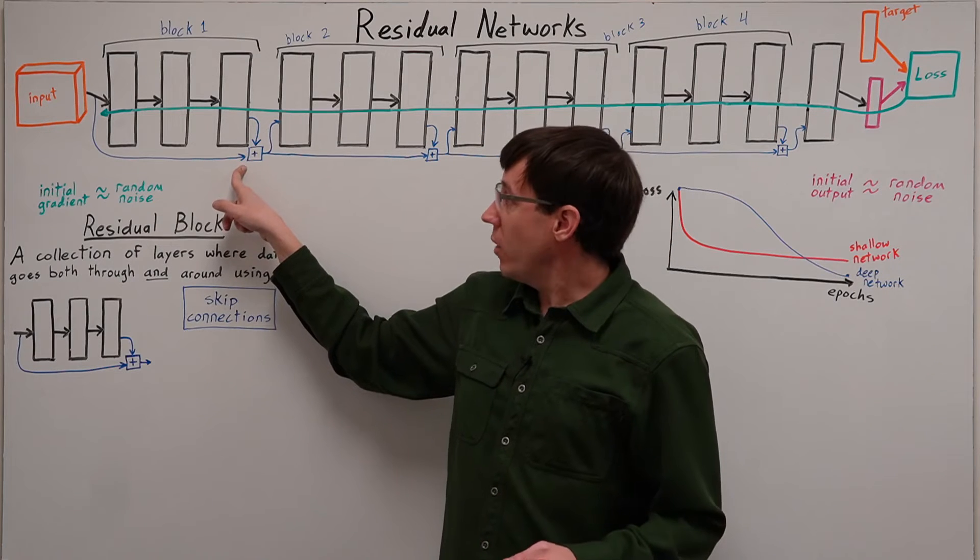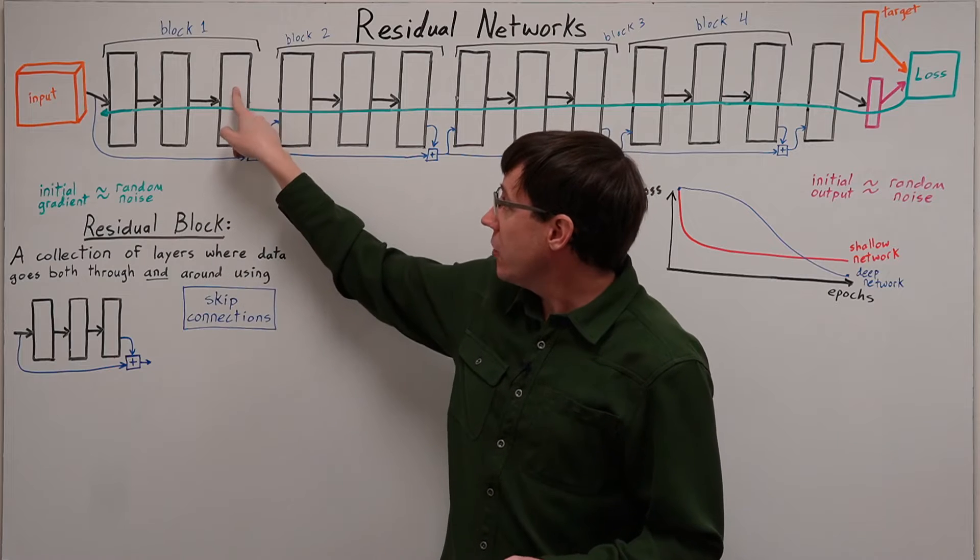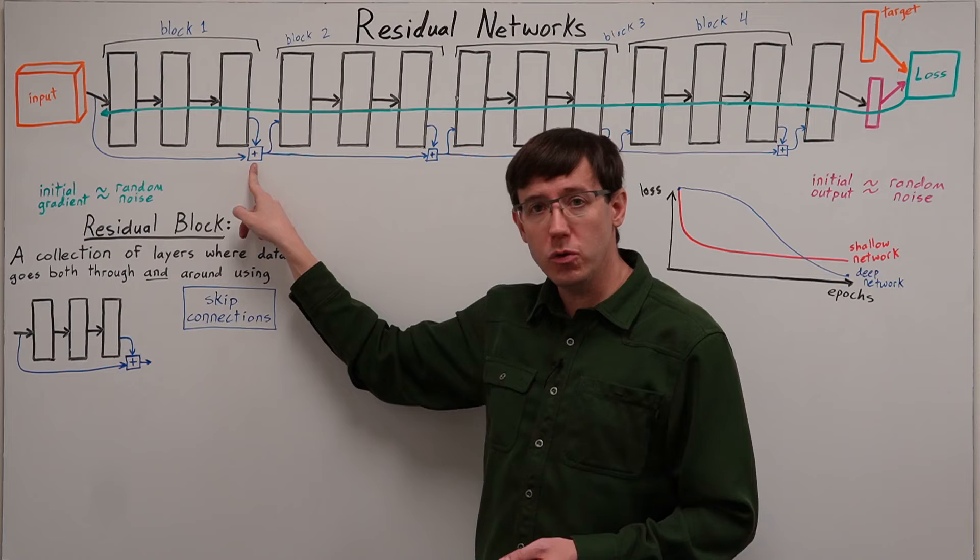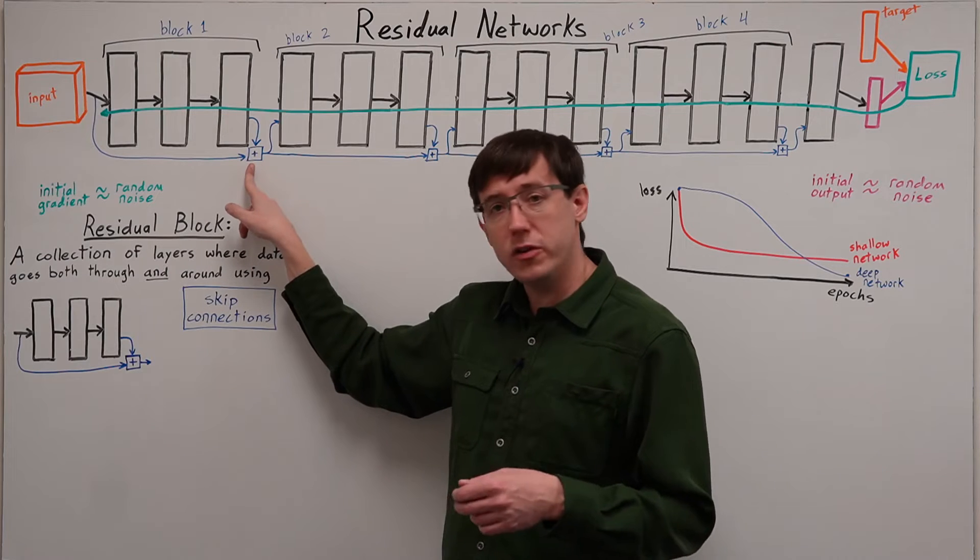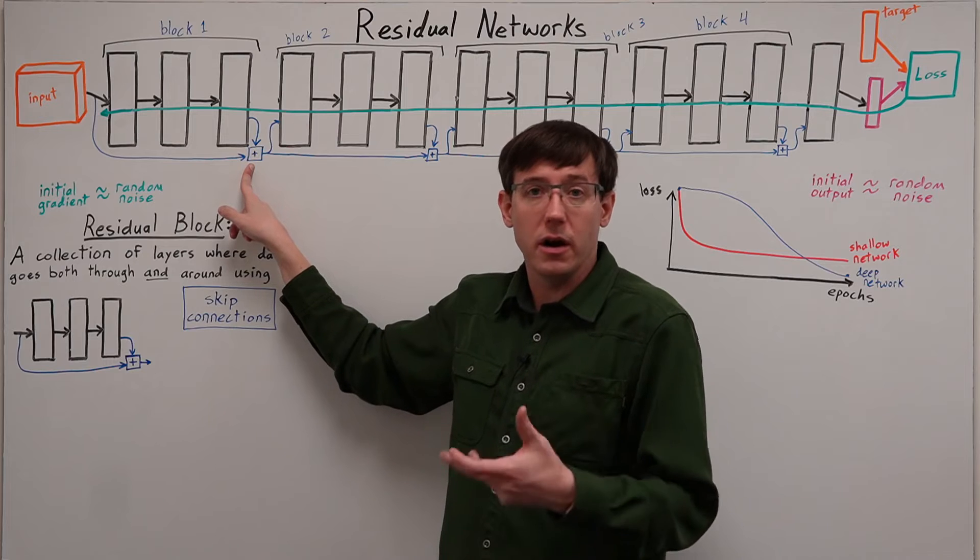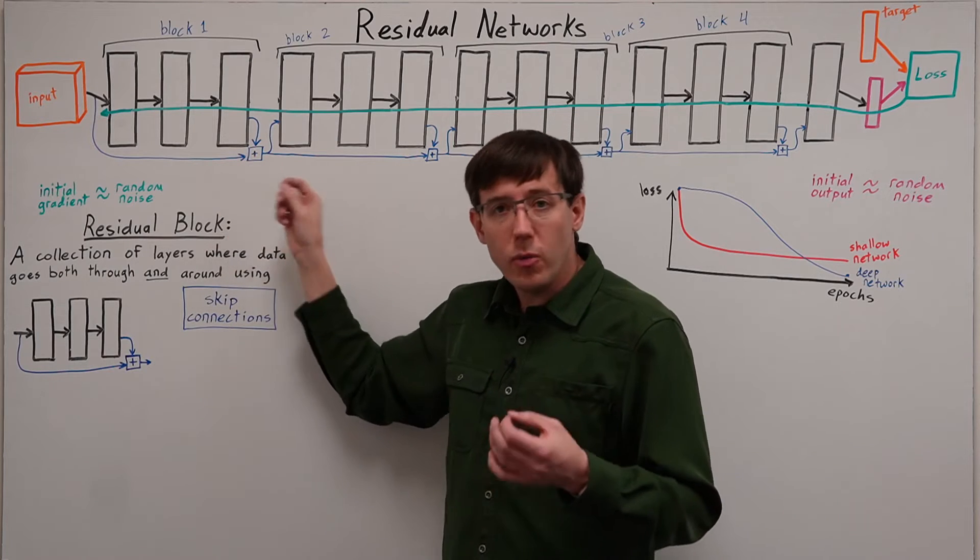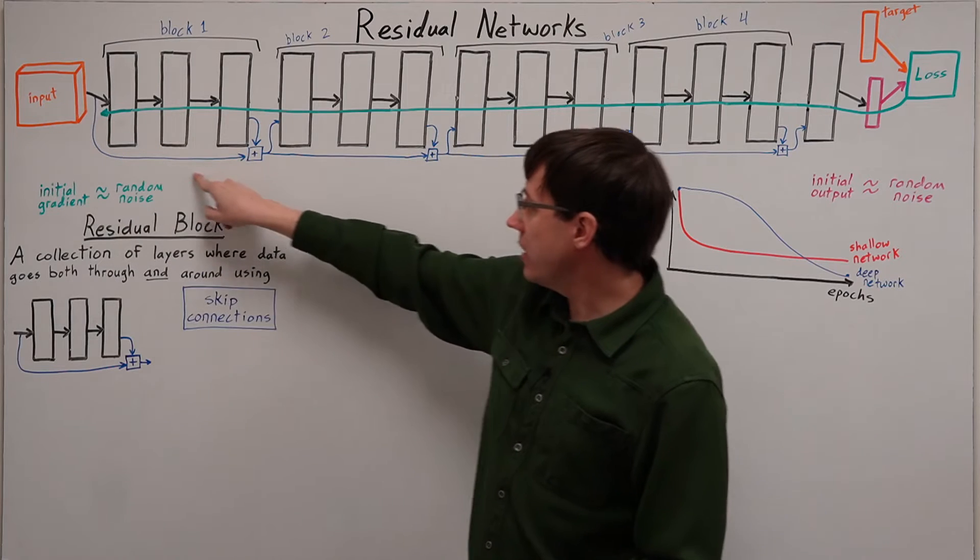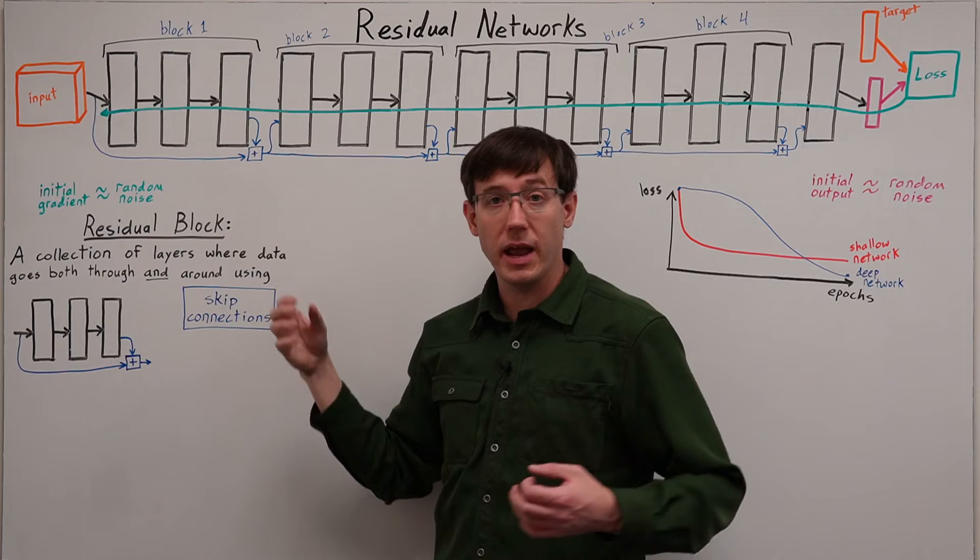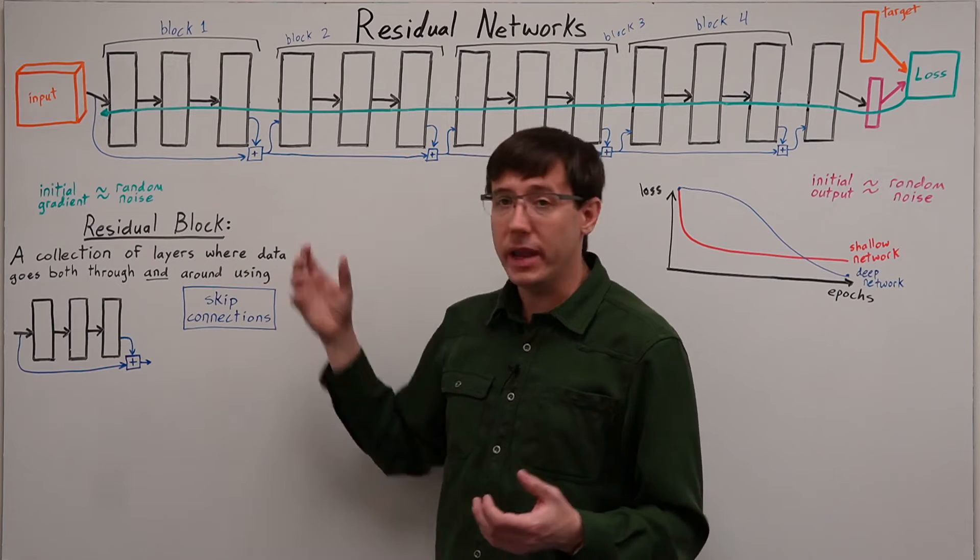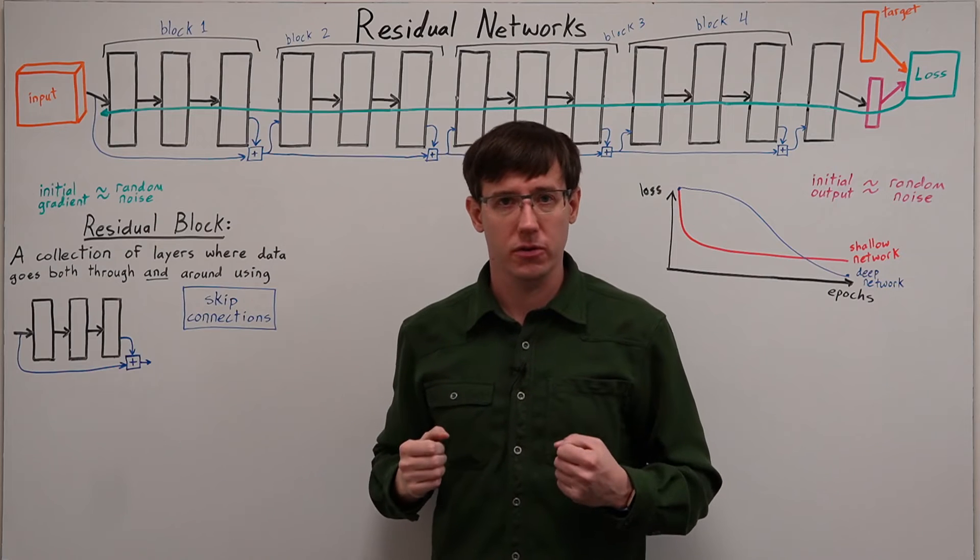We then need some way of combining the output of the block with the input to the block. And we want this to be a simple function that passes gradients along undisturbed. And for that we have a couple of choices. We can either take the tensor of inputs and the tensor of outputs and add them element-wise, or we can concatenate those tensors.